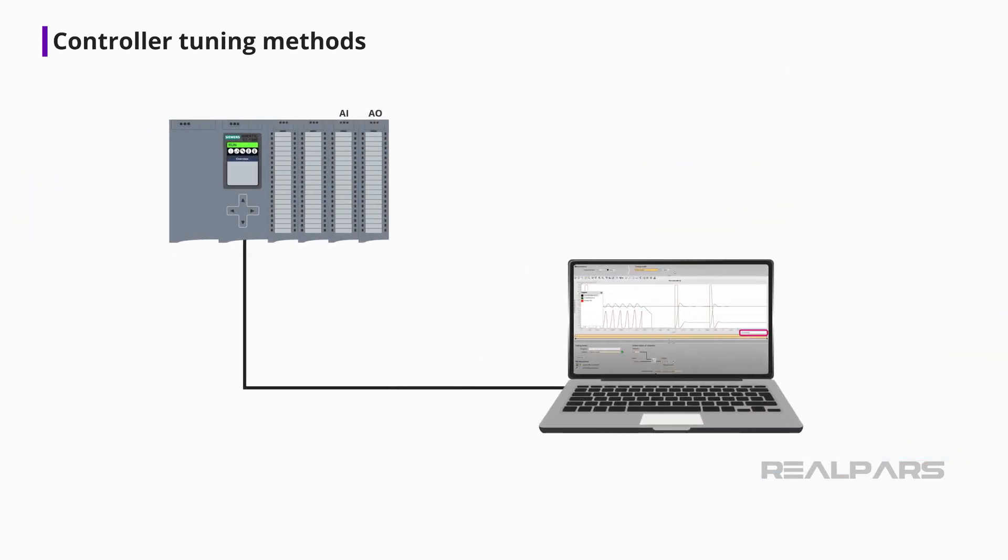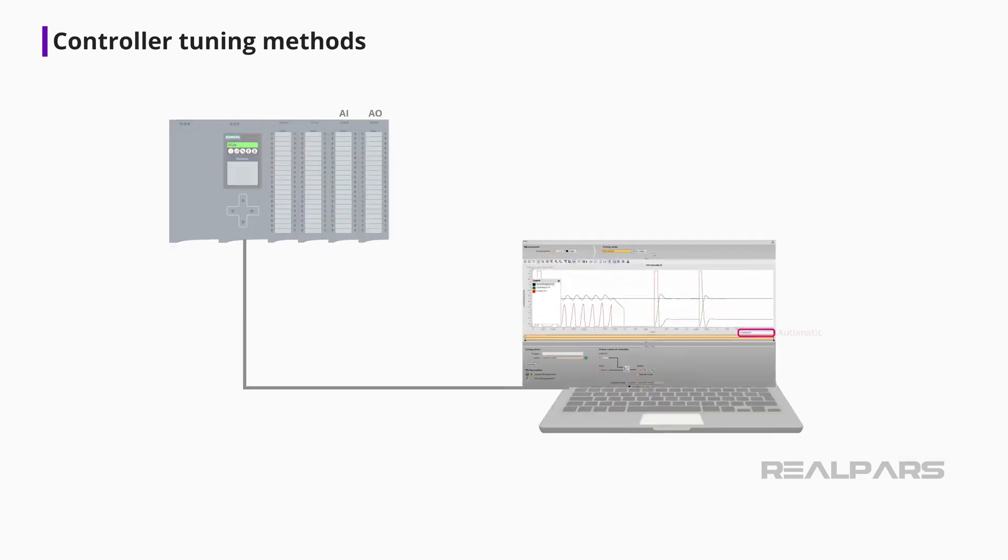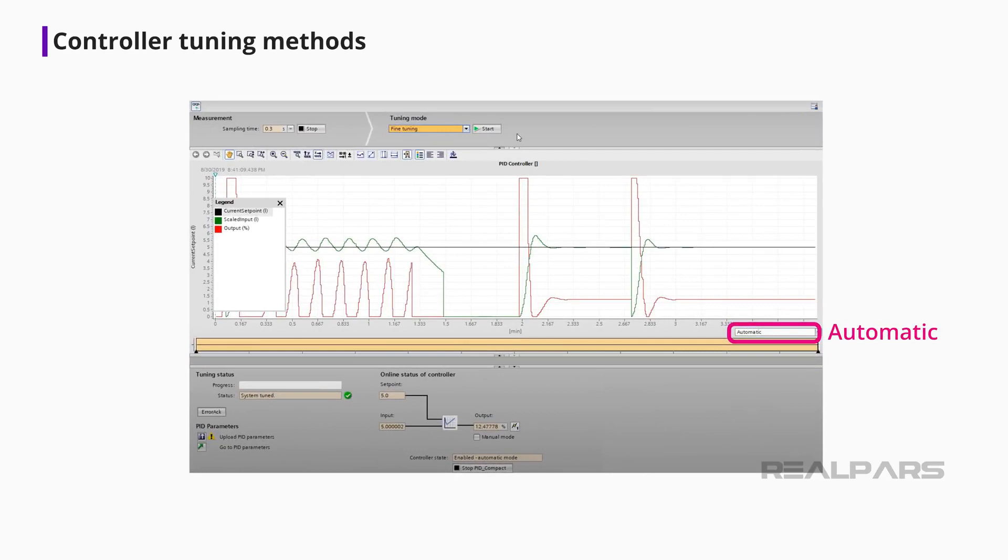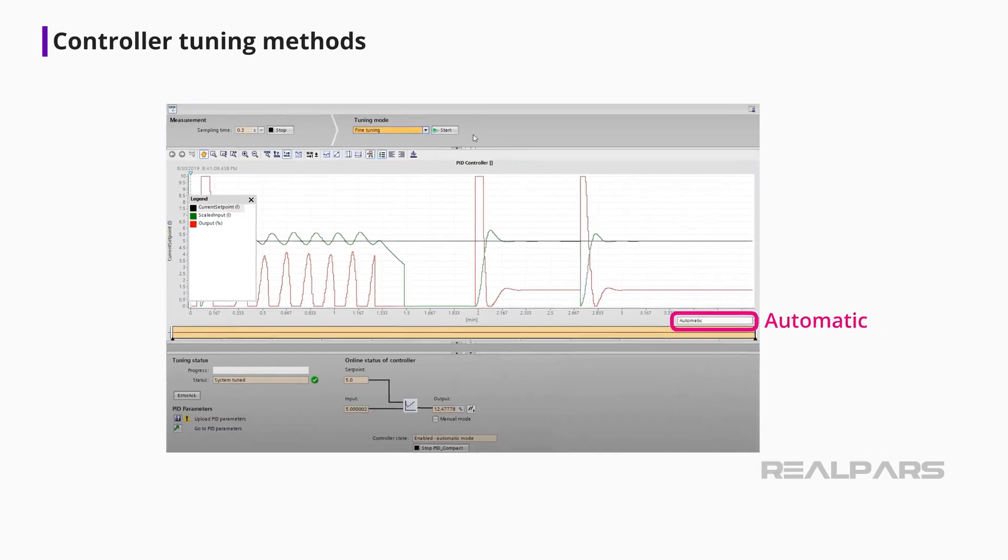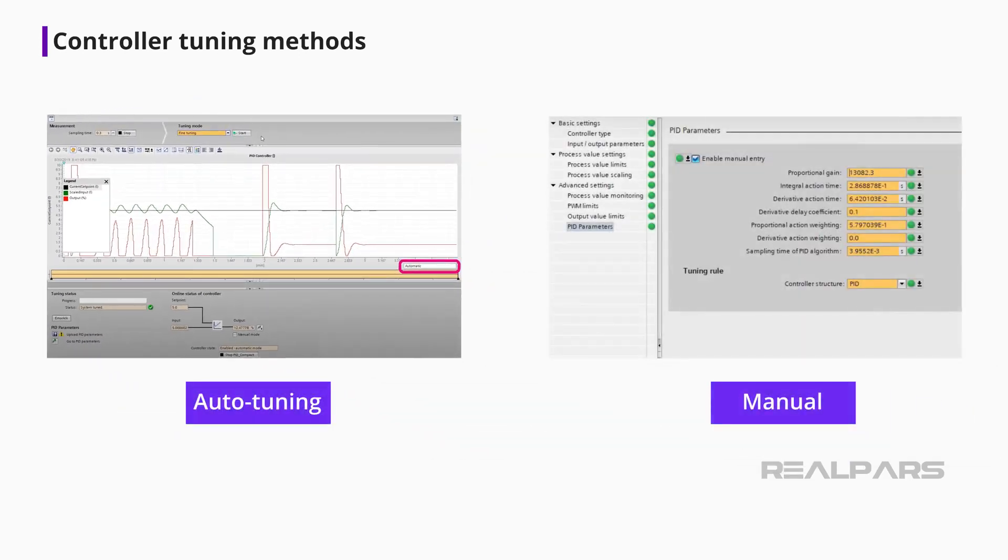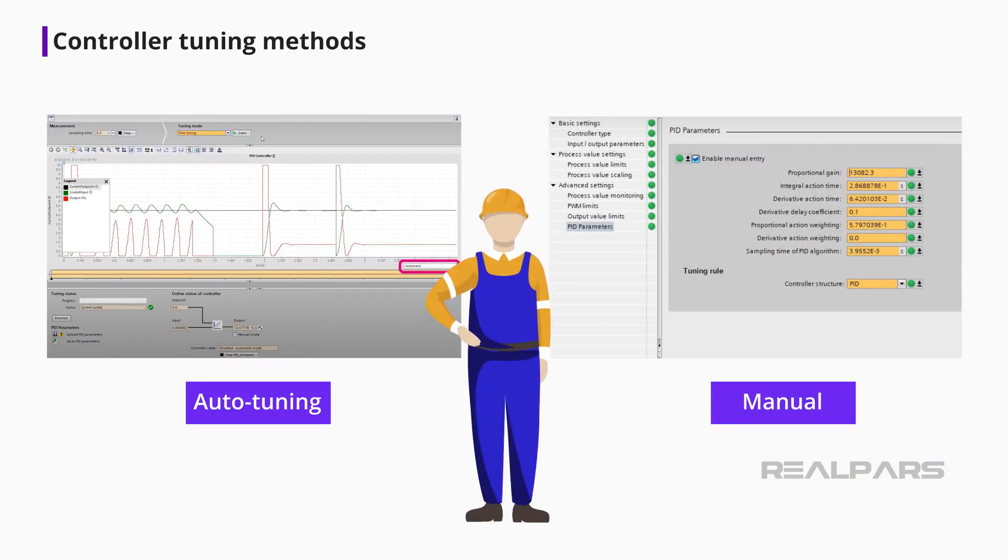Most process controllers, PLC, and DCS loop controllers sold today have auto-tuning capability. The PID controller learns how the process responds to a change in setpoint and suggested PID settings. Regardless of whether the initial PID parameters are derived from the manual or auto-tuning methods, additional tweaking is often required by seasoned automation professionals to get the response desired.